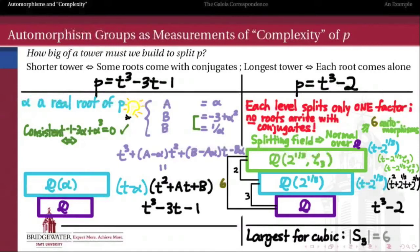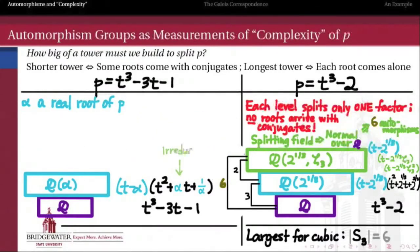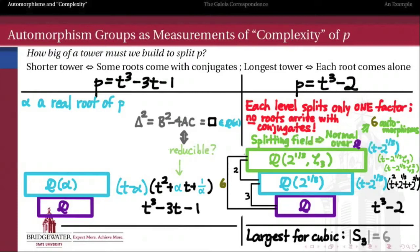So we can write the quadratic factor as t squared plus alpha t plus 1 over alpha. Now the question is: once we adjoin alpha, do we have all of the roots of p? We will have all of the roots if and only if this remaining quadratic is reducible — if and only if it factors. Because we have the quadratic formula, the roots of that quadratic will belong to Q adjoin alpha precisely if b squared minus 4ac — the discriminant — is a perfect square in the field Q adjoin alpha. So we need to determine whether alpha squared minus 4 times 1 over alpha is a perfect square in Q adjoin alpha.